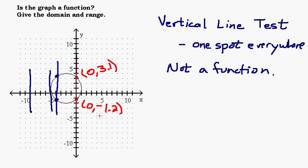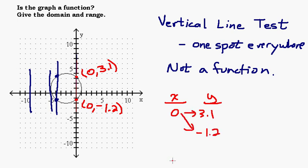So that means I've got these two points on my graph. Remember, the definition of a function is each x can be paired with exactly one y. If you have an x value of zero being paired with two different y values, then that is not a function. When the vertical line touches in two spots, that means a particular x is being paired with two different y values. If it touches in three spots, it's paired with three different y values. So that's why it has to intersect in one spot everywhere — each x must be paired with exactly one y in order for it to be a function.